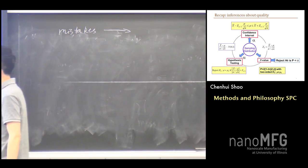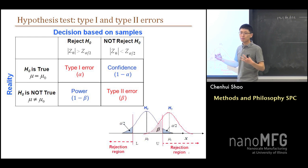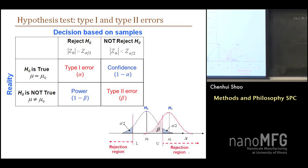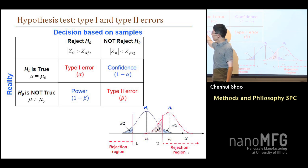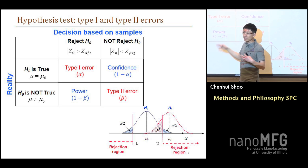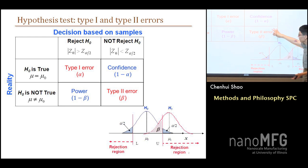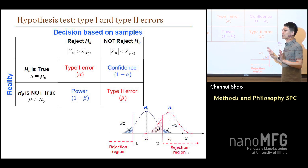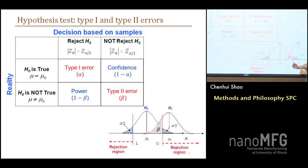Then we have several different scenarios. In this matrix, the horizontal shows the decision based on samples — our decision we make based on our samples. The vertical shows the reality, which is the ground truth. There are four different scenarios. The first: H-null is true, and if we make the decision to reject H-null, we are making a mistake. We call this a Type 1 error, and the probability of making this kind of error is alpha. The second: H-null is true, and we conclude that H-null is not rejected — we support H-null, so our conclusion is correct. The probability of making the right decision when H-null is true is one minus alpha.